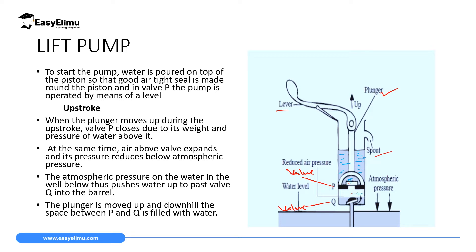During upstroke, valve P will close due to the weight of the liquid above it. When it has closed, the space between P and Q will expand to a very large volume. Since there is only air in that space, the gas pressure will be very low — when a gas is not compressed, it has very low pressure. So between P and Q we have low pressure, valve P is closed, and we have high atmospheric pressure from outside.